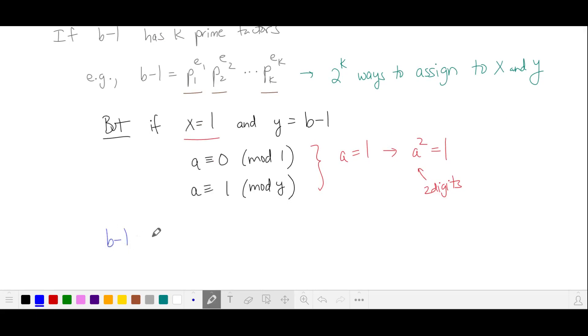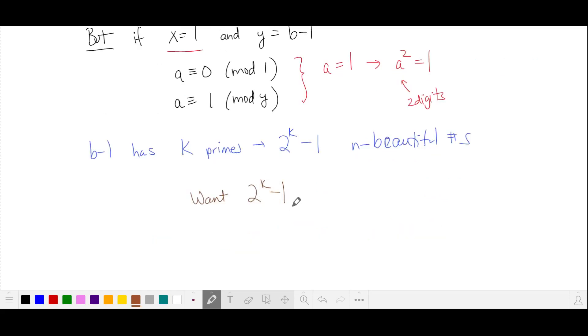So if b minus 1 has k primes in its prime factorization, we can arrange them in 2 to the k minus 1, including this case, and that's going to correspond to the number of beautiful numbers. We want 2 to the k minus 1 to be greater than or equal to 10, which means k is greater than or equal to 4.